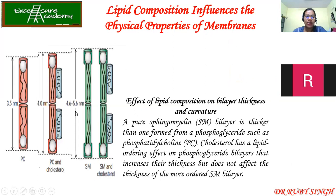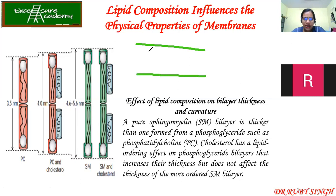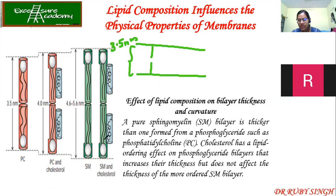Looking at the images makes this more clear. If you have PC (phosphatidylcholine) without cholesterol, the width of the phospholipid bilayer — the hydrophobic core — is about 3.5 nanometers. A pure sphingomyelin bilayer is thicker than one formed from phosphoglycerides such as PC. So if you had sphingolipids, for example sphingomyelin, the plasma membrane would be thicker compared to a normal cell.